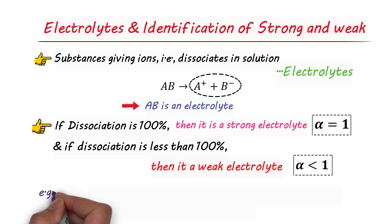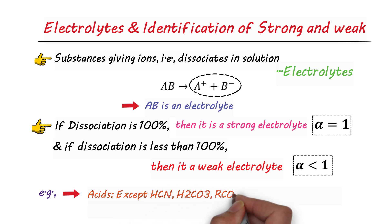For example, among acids, except hydrogen cyanide, carbonic acid, acetic acid, boric acid, hydrozoic acid, or hydrogen fluoride, almost all other acids are strong. For instance, the mineral acids, like sulfuric acid, nitric acid, hydrochloric acid, they are very strong.